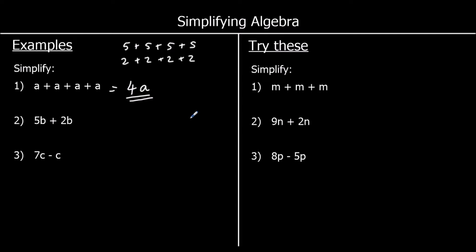Don't get 4a confused with a times a times a times a, which is a to the power of 4. So 4 lots of a is not the same as a multiplied together 4 times.